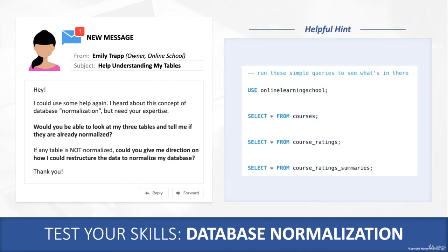Just as a hint, here are some basic queries so that you can actually see the data that's in those tables. You may want to look at places where you think there might be any unnecessary duplication. Give this a shot on your own. If you have a lot of trouble, you may want to go back and watch the previous couple of videos on database normalization. Hopefully you're able to get there on your own. Good luck!